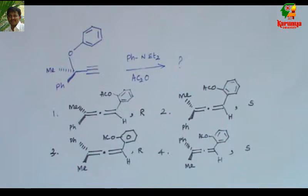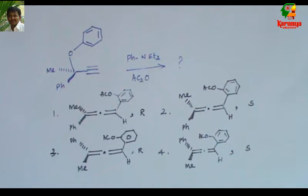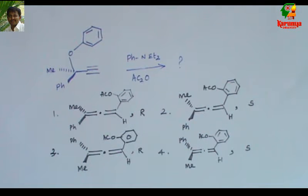Today I am going to solve a problem on 3,3-sigmatropic rearrangement in phenyl propargyl ether. You can find this problem in CSIR NET exam 2012 June. Here is the problem.